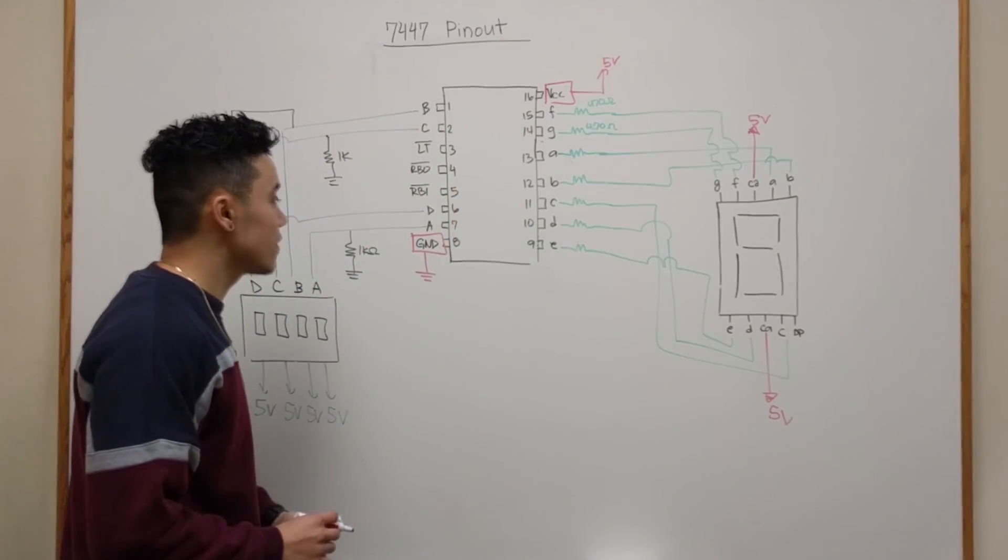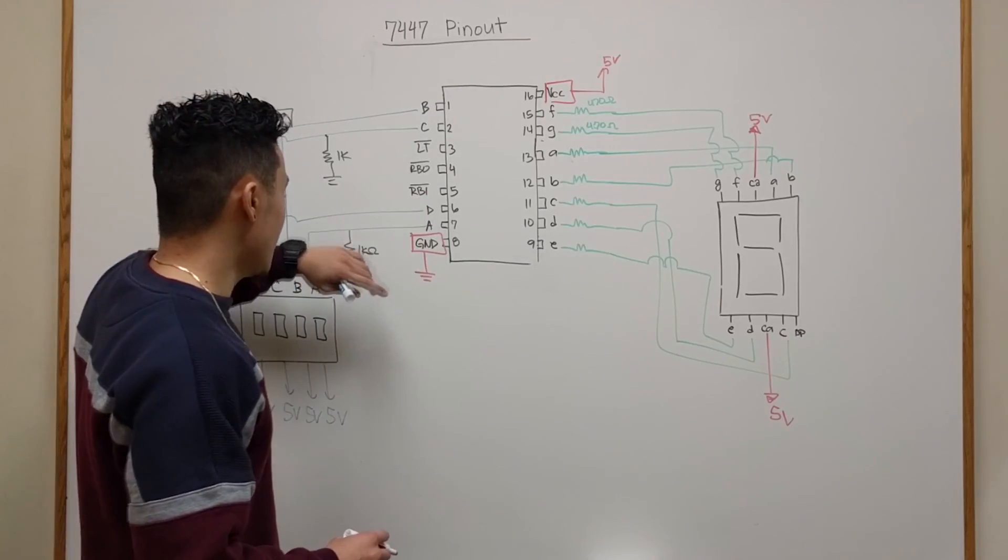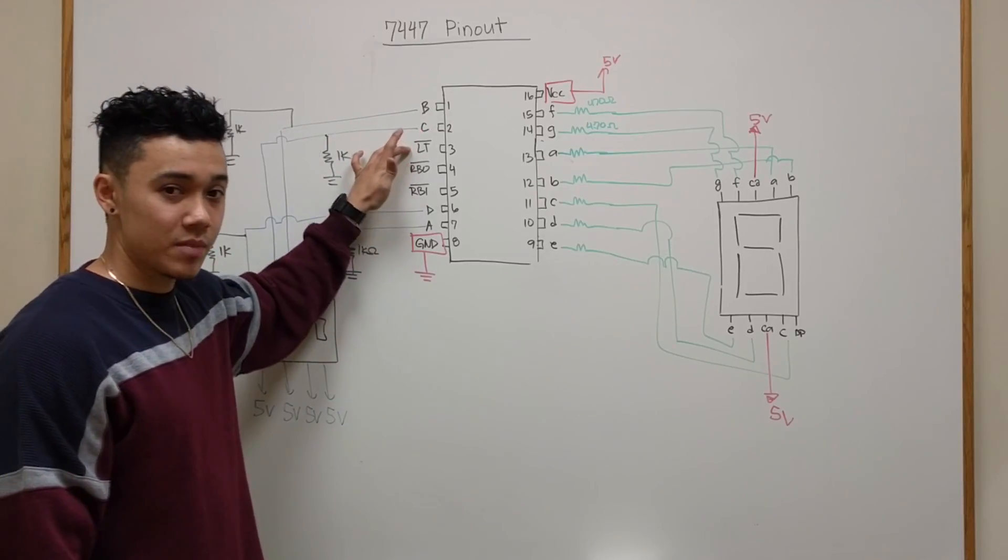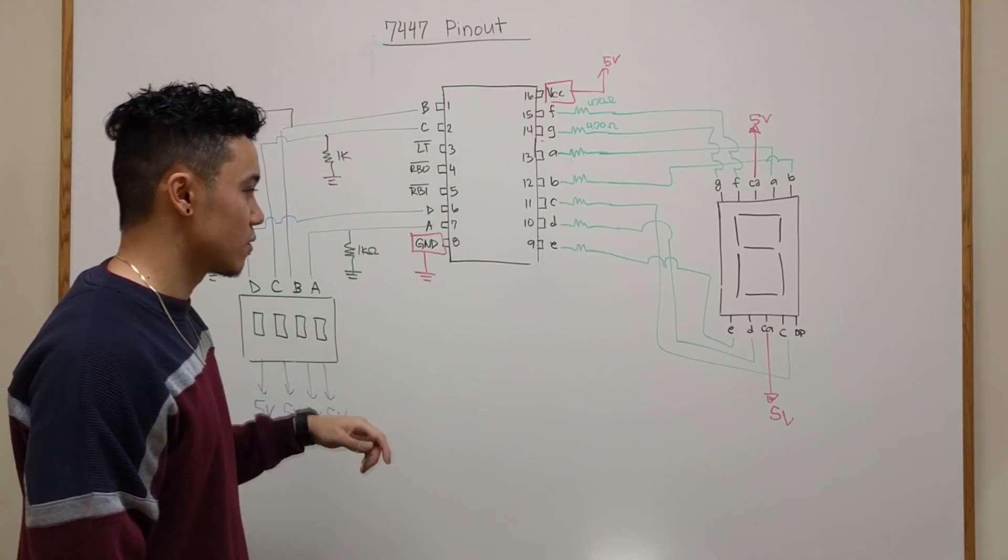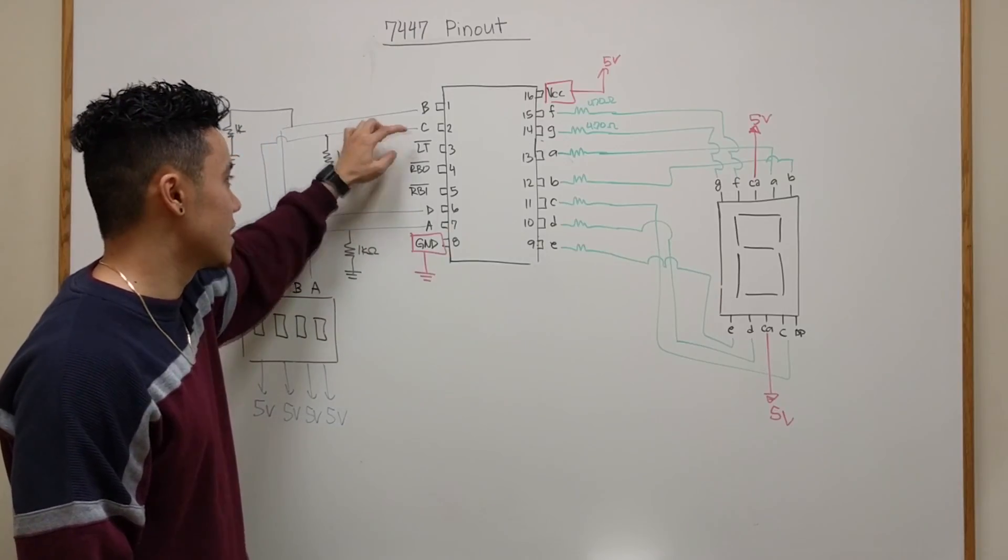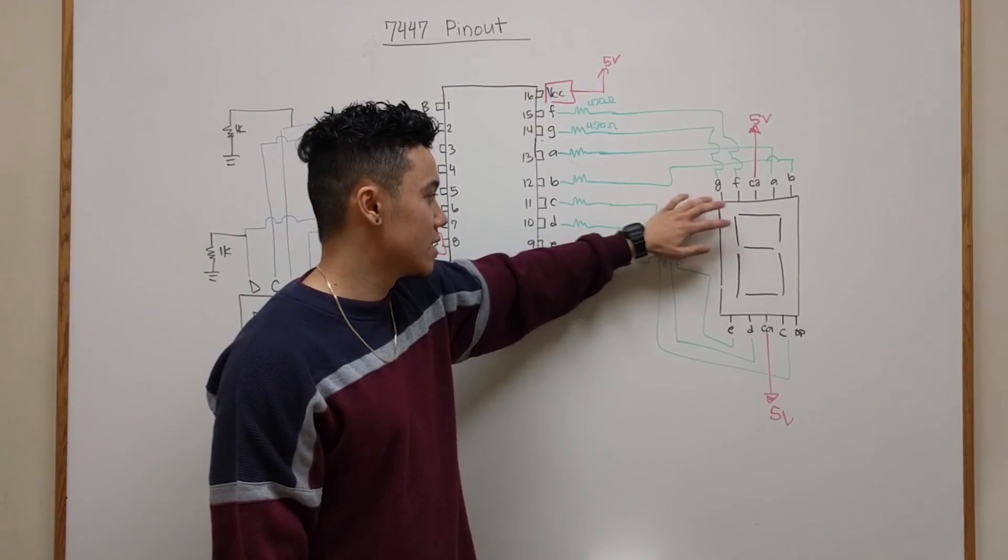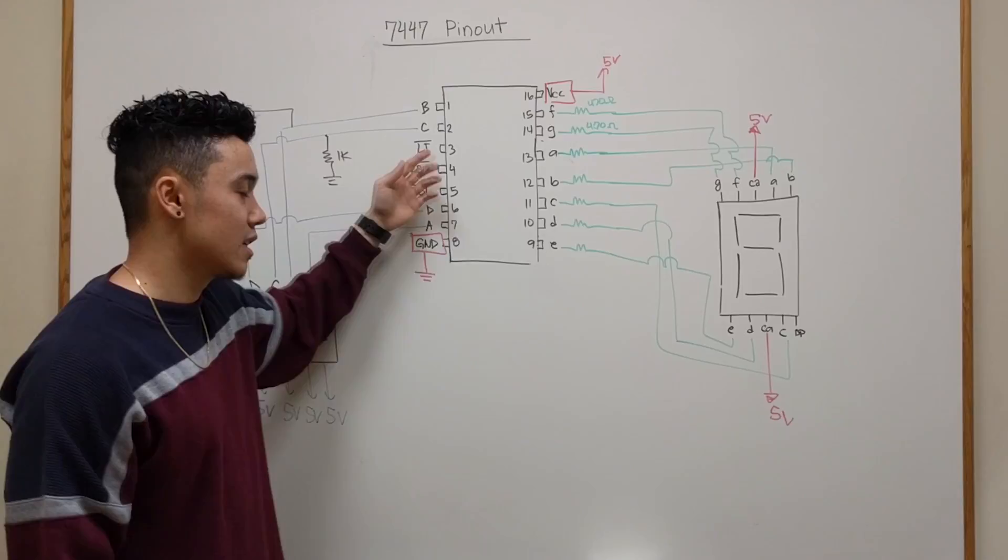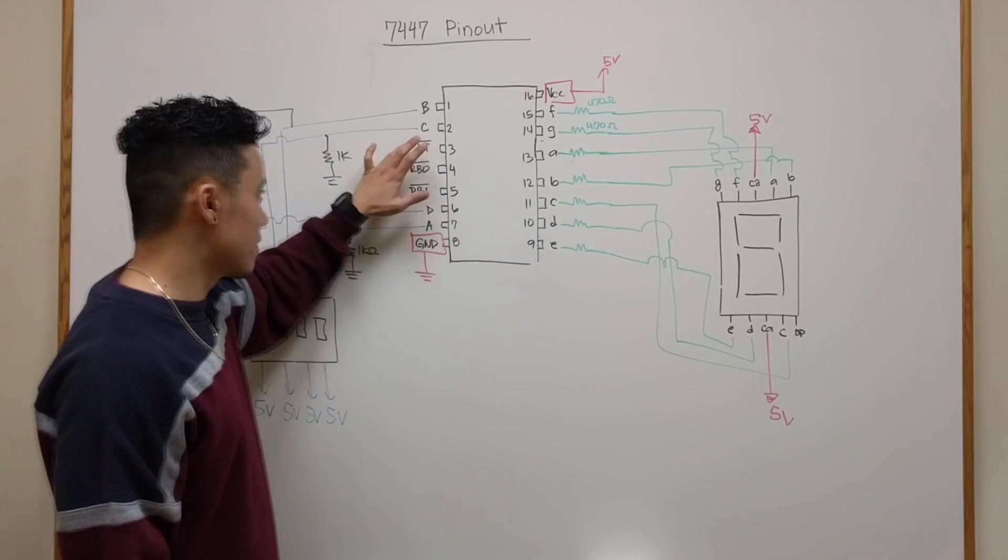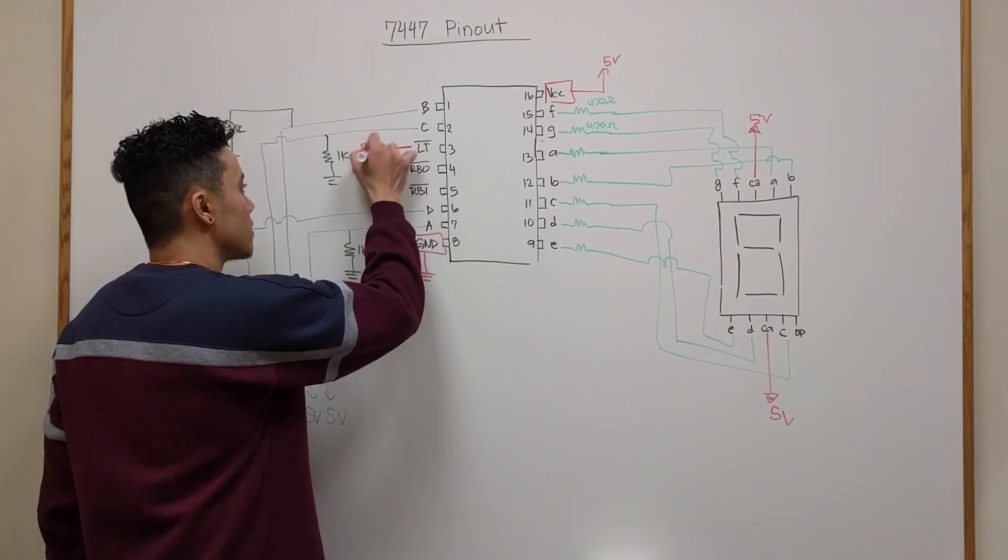So far we've covered all the 7 segment display, our input switches A B C D, and what we have left is just LT, RBO, and RBI. LT stands for lamp test and what it does is when you connect this to ground, since it is active low, all of your 7 segment display pins should light up. This serves as a test to see if your 7 segment display is functioning properly. If you're not going to be testing this you could just tie this straight to power, to your 5 volts.